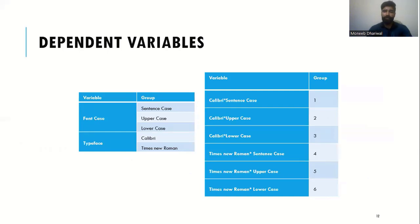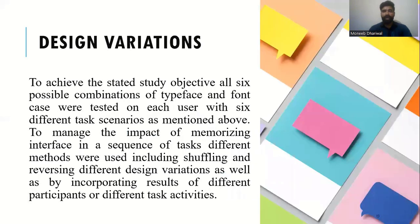Furthermore, we have analyzed pairwise groups of these font faces and font cases. Our main objective was to investigate the impact of typeface and font case on the performance of the safety-critical systems. All six possible combinations of typeface and font case were tested on each user with six different task scenarios. To manage the impact of memorizing, different methods were used, including shuffling and reversing different design variations, as well as incorporating results of different participants and different task activities.